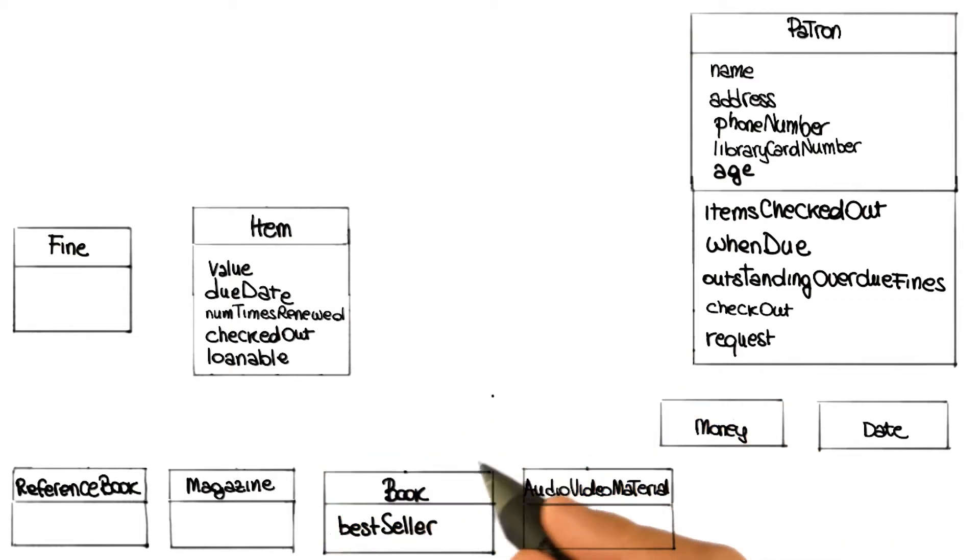One thing I didn't understand is how come you put checkout over with the patron when it's really the item that's being checked out. That actually is a perfect segue for the next thing I wanted to model. What you're talking about is basically a relationship between two classes, which is something we haven't touched on yet. What you're pointing out is that patron and item are somehow related. This checkout operation doesn't belong only in the patron, because it needs to know about the item, and doesn't belong only in the item, because it needs to know about the patron.